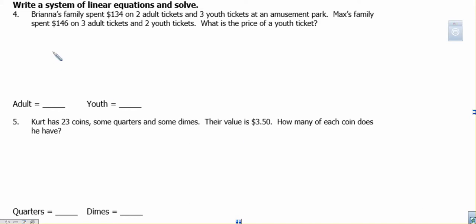Number four. Brianna's family bought or spent $134 on two adult tickets and three youth tickets. Max's family spent $146 on three adult tickets and two youth tickets. What's the price of a youth ticket? And really, we want to know adult and youth. So let's say we have A and we have Y for youth. Two adult and three youth is $134. And then the second set, we've got Max's family spent $146 on three adult tickets and two youth tickets. There's our system right there.